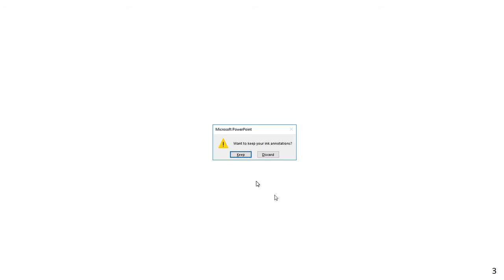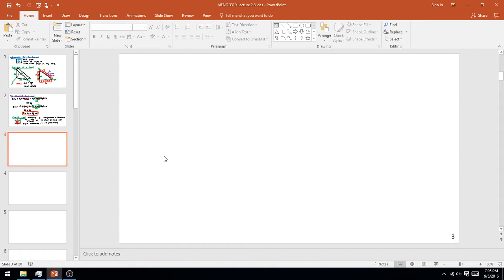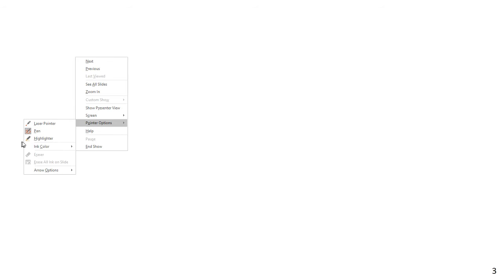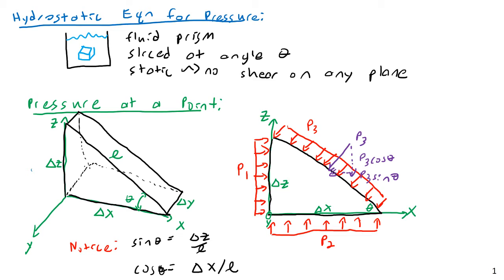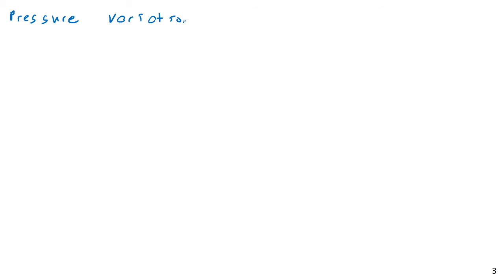Let's now look at the pressure variation in a fluid at rest. In the previous example I was looking at a single differential point whose dimensions could be assumed to be zero. Now, what if I look at a larger volume so that its dimensions are not assumed to be zero?